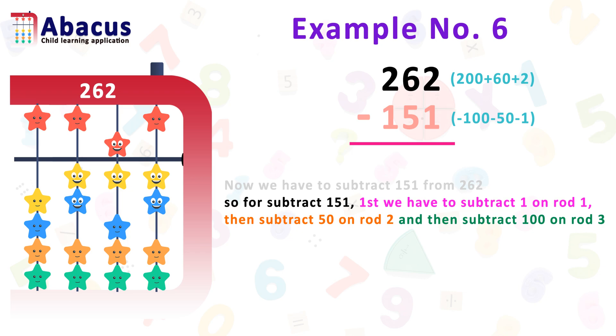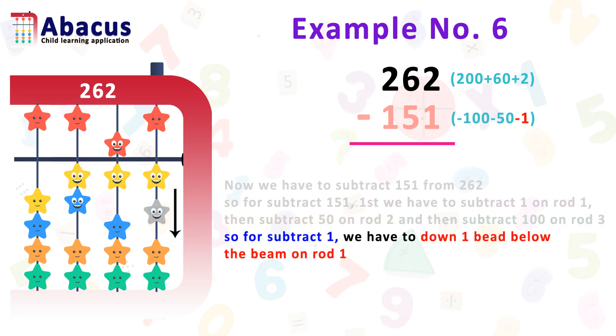For subtract 1, we have to down 1 bead below the beam on rod 1. Here we have 2 beads on rod 1. So, we can easily subtract 1 bead.